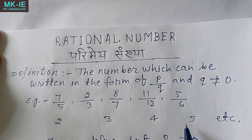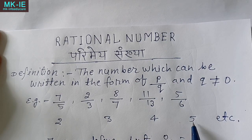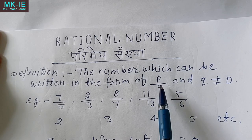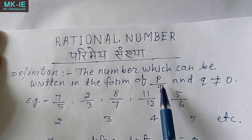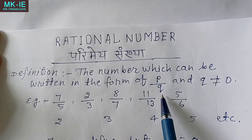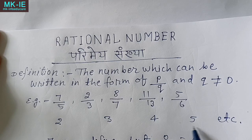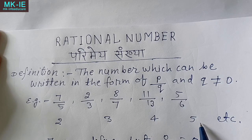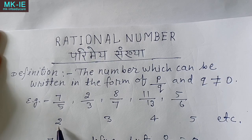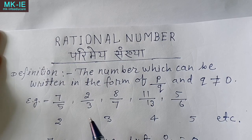Now, 2, 3, 4, 5 — these are rational numbers. But the way we see it, the p/q form shows rational numbers. 2, 3, 4, 5 are not directly in p/q form, so how can we call them rational numbers? We can write them in p/q form.